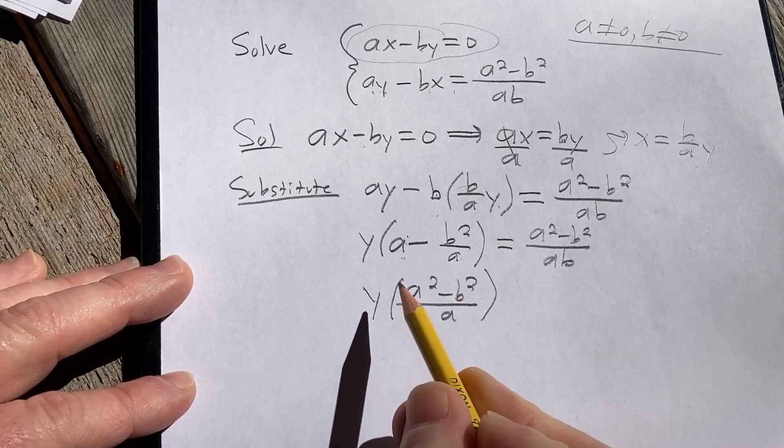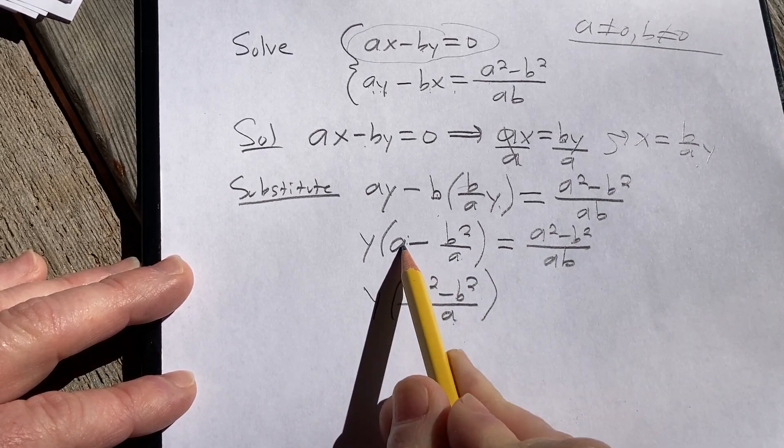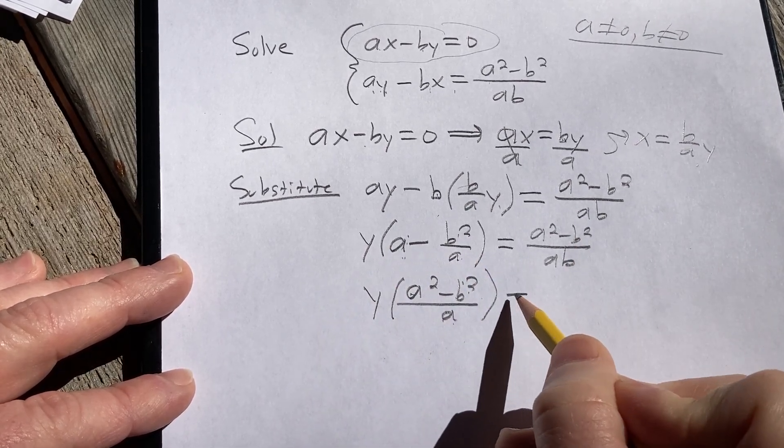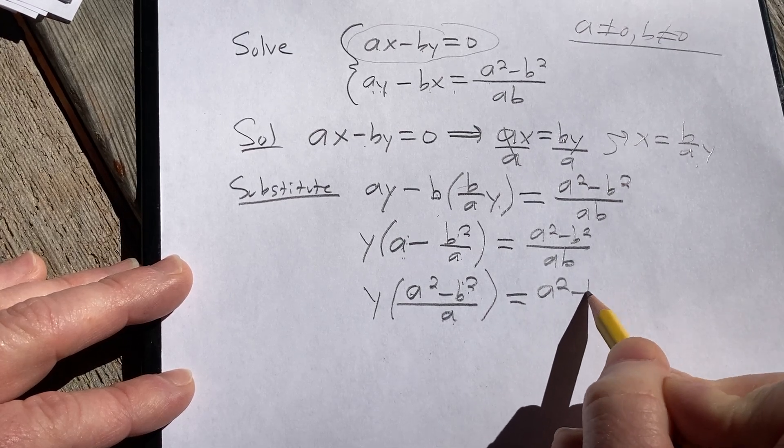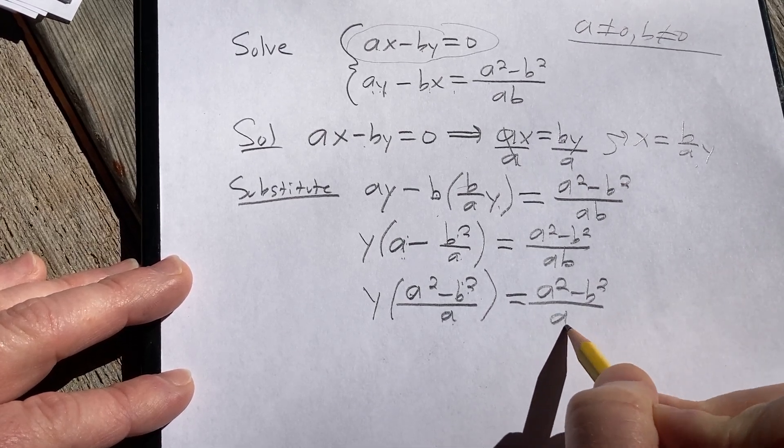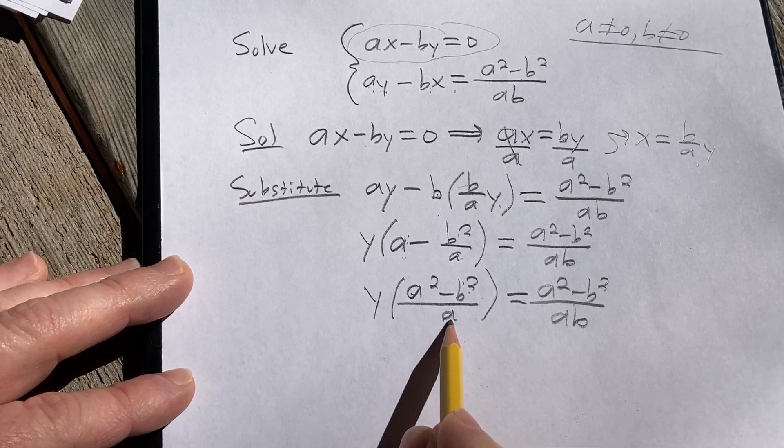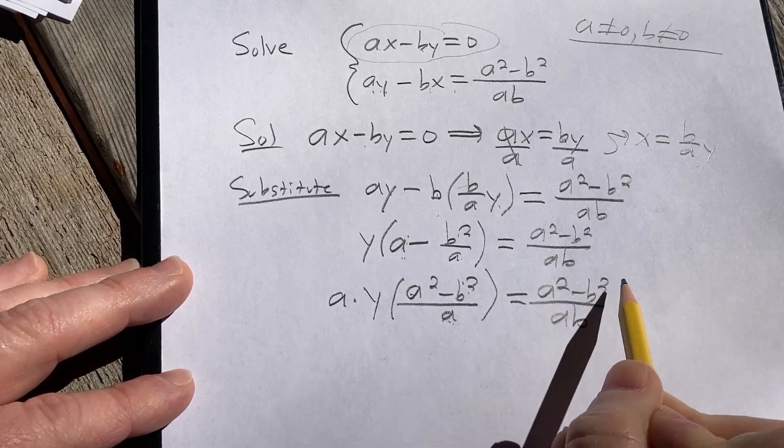So I skipped some steps here, but this is a squared over a minus b squared over a, which is b squared over a. So everything is good. And this is equal to a squared minus b squared over ab. And this a is kind of annoying, so we can multiply by a. Multiply by a.